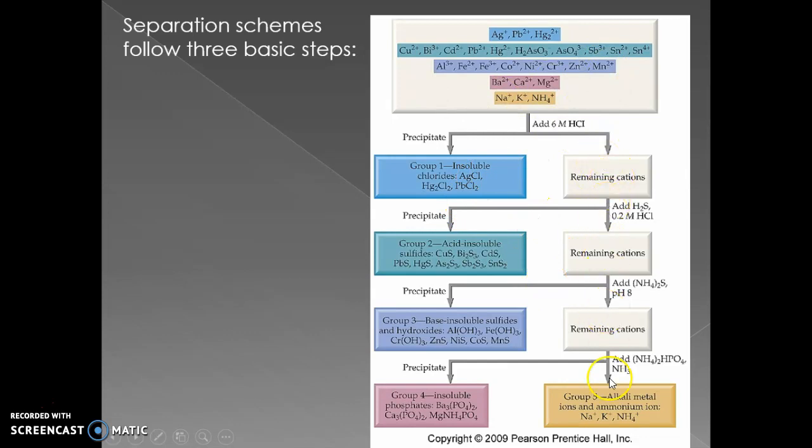You go through a series of steps until eventually you've added everything and precipitated everything out that you possibly can. And what do you have left? You have rule one ions, ammonium and alkali metals that are still dissolved in solution.